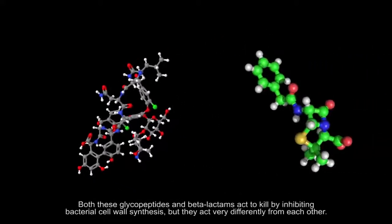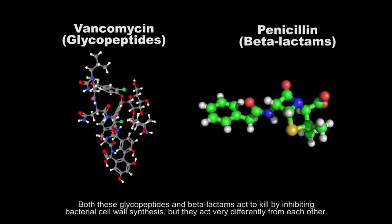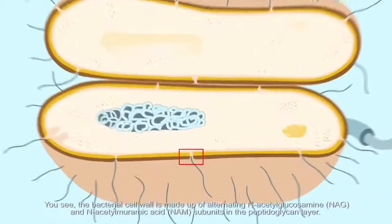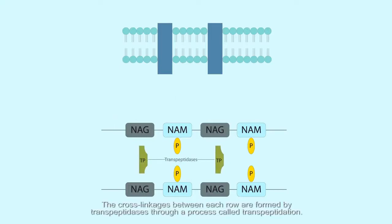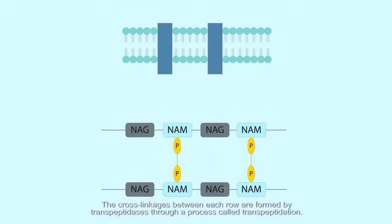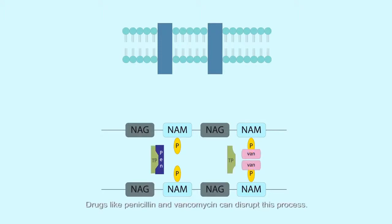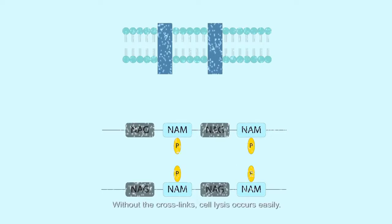Both glycopeptides and beta-lactams act to kill bacteria by inhibiting bacterial cell wall synthesis, but they act very differently from each other. The bacterial cell wall is made up of alternating N-acetyl glucosamine and N-acetyl muramic acid subunits in the peptidoglycan layer. The cross-linkages between each row are formed by transpeptidases through a process called transpeptidation. Drugs like penicillin and vancomycin can disrupt this process. Without the cross-links, cell lysis occurs easily.